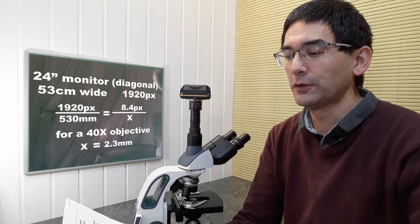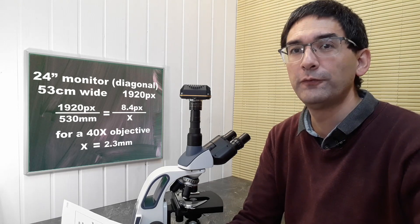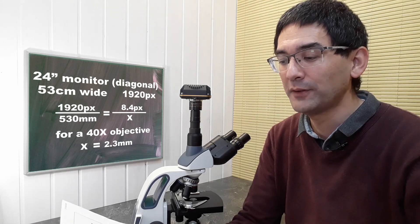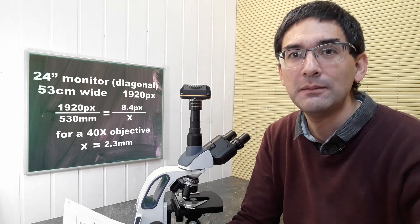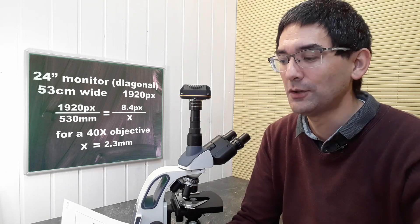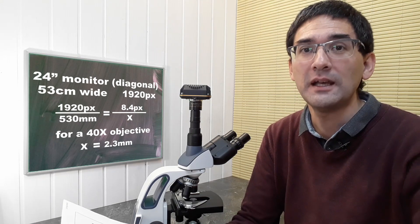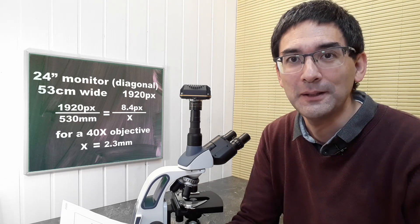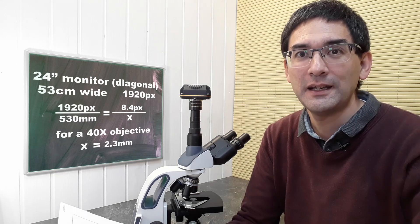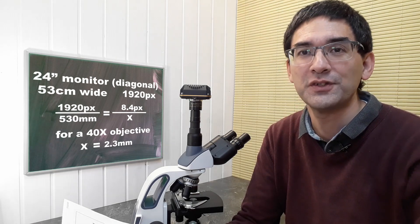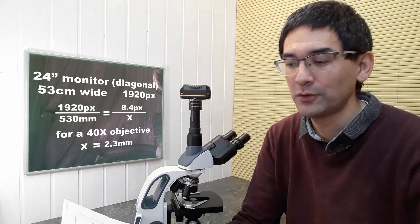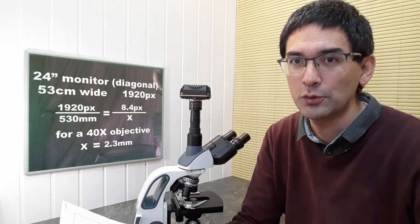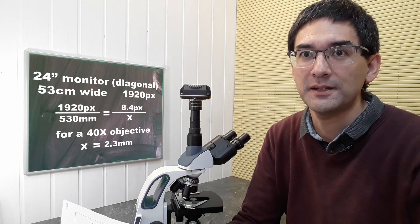I did research on the 24 inch monitor. Assuming a 16 to 9 aspect ratio, the monitor must be around 53 centimeters wide, which is 530 millimeters. Assuming the monitor has full HD resolution, the horizontal number of pixels is 1920.